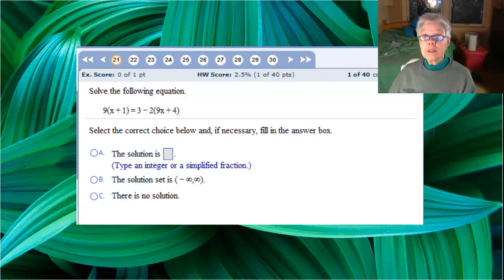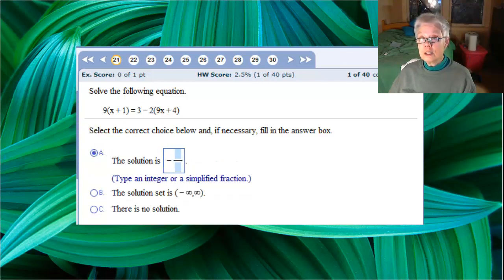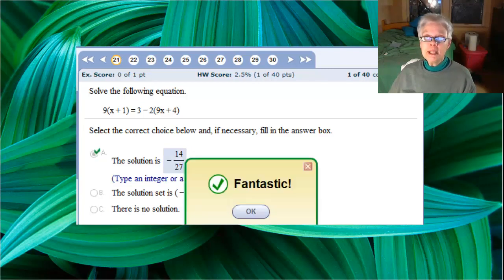Now let's put that answer in the answer box. Negative 14 over 27. No, no, 14 over 27.